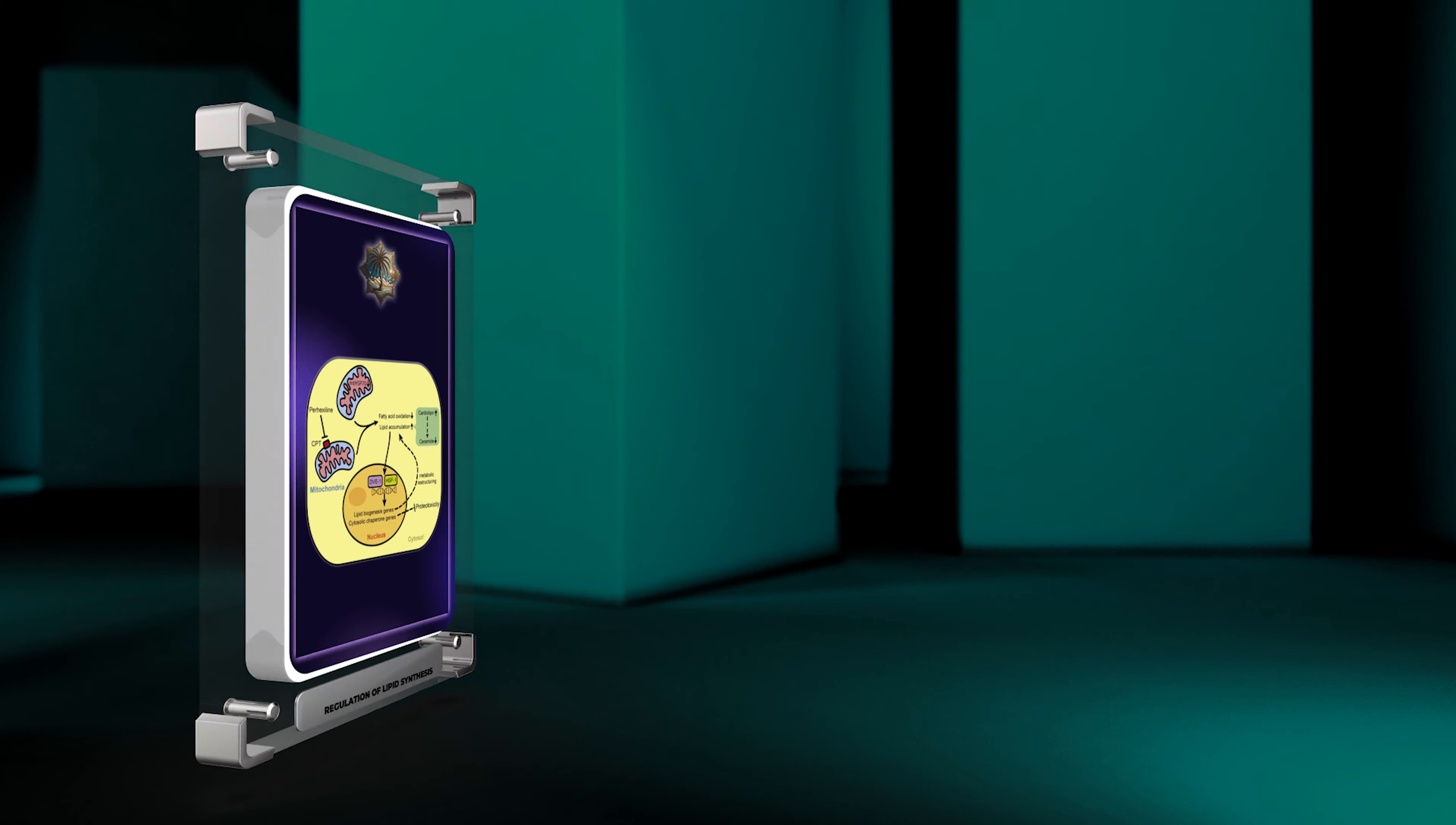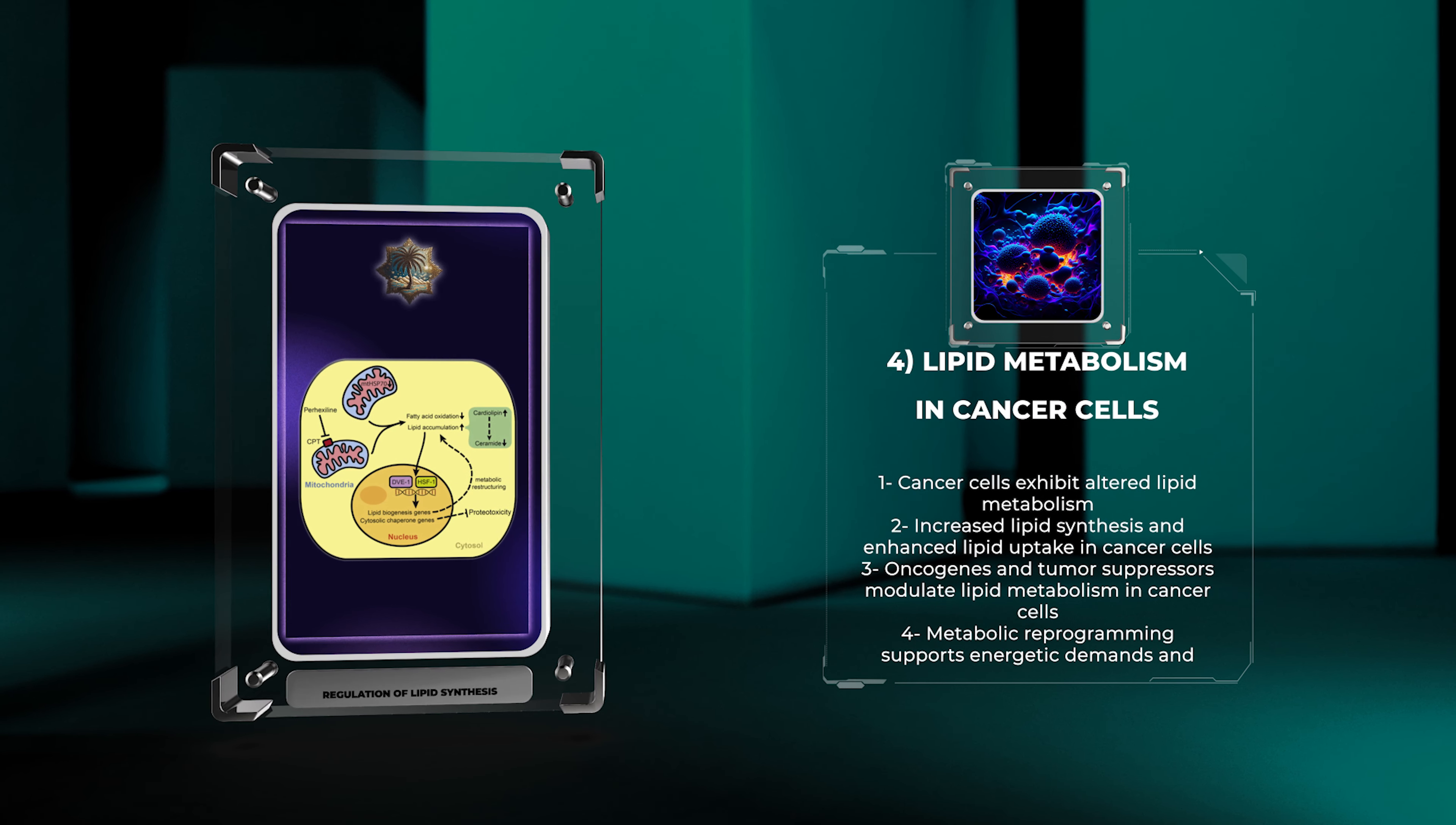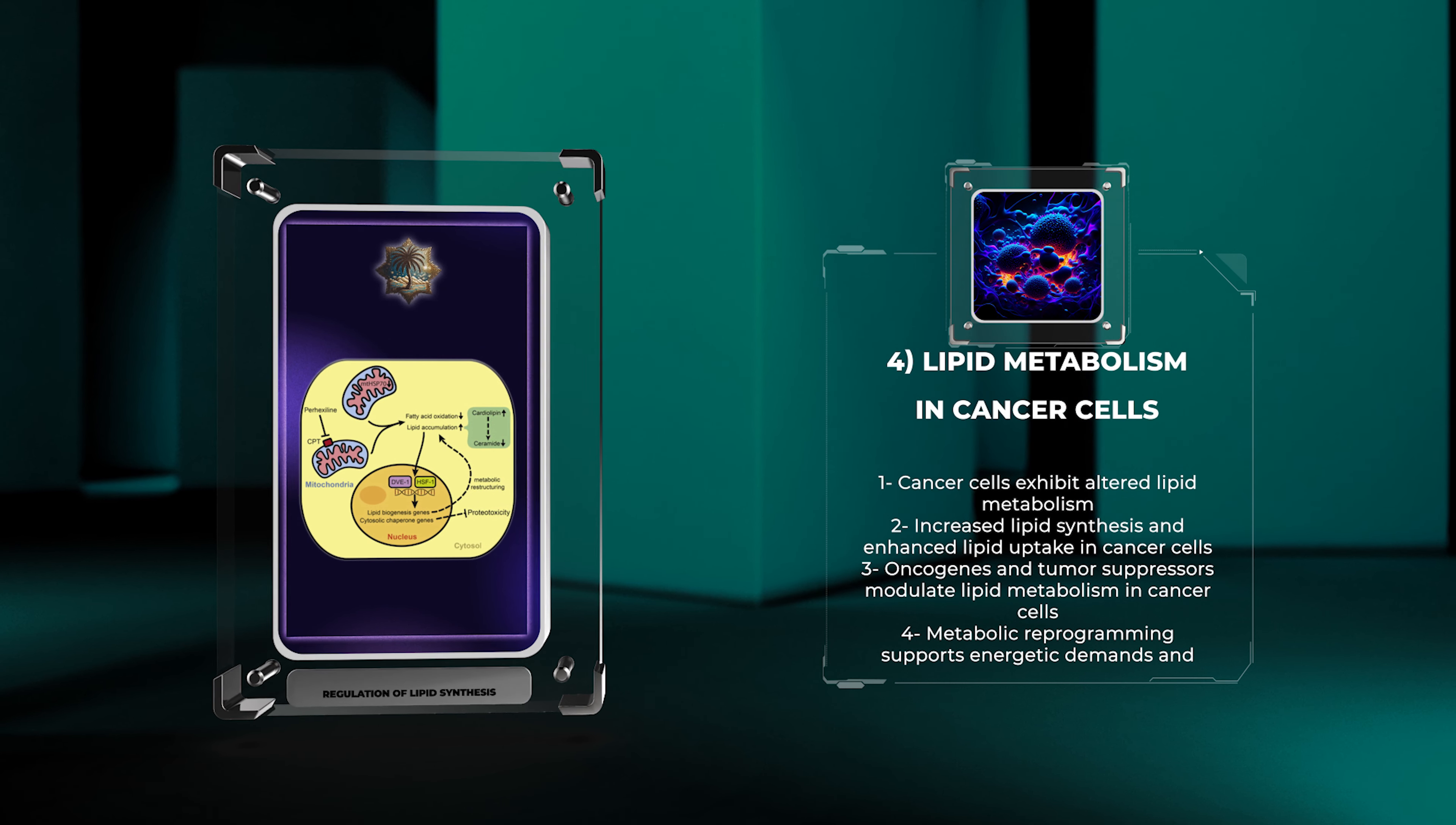Cancer cells exhibit altered lipid metabolism to support their proliferation and survival. Compared to normal cells, cancer cells show increased lipid synthesis and enhanced uptake of extracellular lipids. Various oncogenes and tumor suppressors, including MYC, AKT, and P53, play critical roles in modulating lipid metabolism in cancer cells.